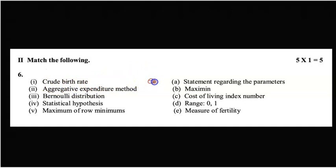As all of you are aware, the crude birth rate is nothing but the measure of fertility, so the correct option is E. The aggregative expenditure method is used to find the cost of living index number, so the correct option is C. For Bernoulli distribution, the range is 0,1, so correct option is D. Statistical hypothesis is a statement regarding the population parameters, so option is A. Maximum of row minimums from game theory is maximin, option B. So the correct matches are E, C, D, A, and B.